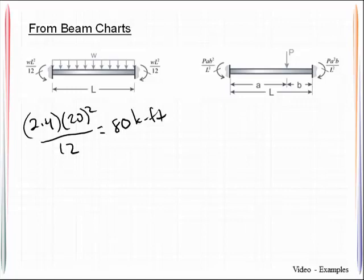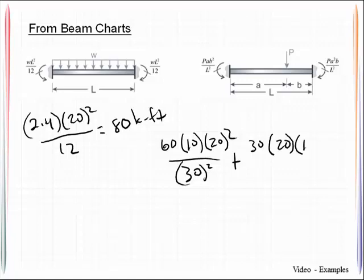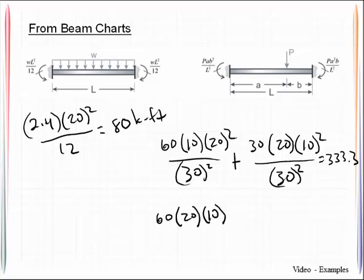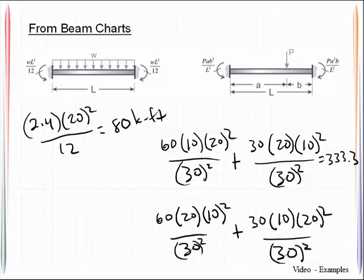For the member AB that has two point loads, we don't have any beam chart that has two point loads on it so we will use superposition to get what's going on there. Just look at the equations. The left end of the beam, this is the computation I would do: 60 kips multiplied by 10 multiplied by 20 feet squared divided by 30 feet squared, and then handle the 30 kip load, 20 feet times 10 feet squared over 30 feet squared, and that will equal to 333.3. Now at the other end of the beam we'll handle the 60 kip load plus the 30 kip load and that will all equal to be 266.7 kip feet.